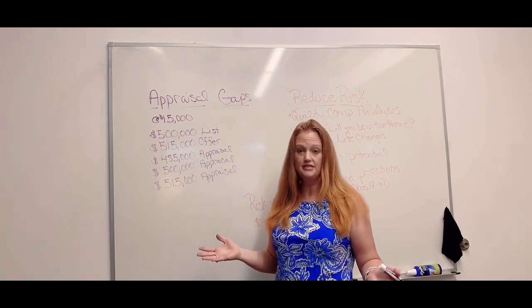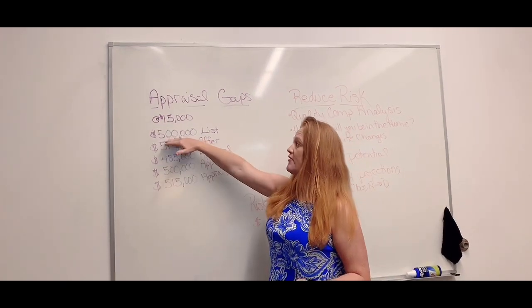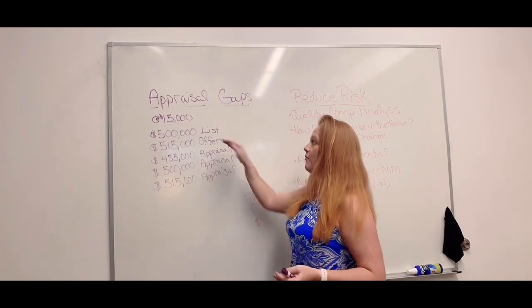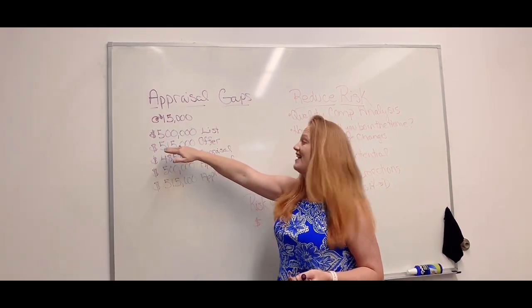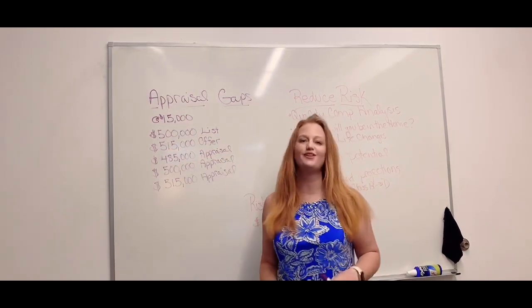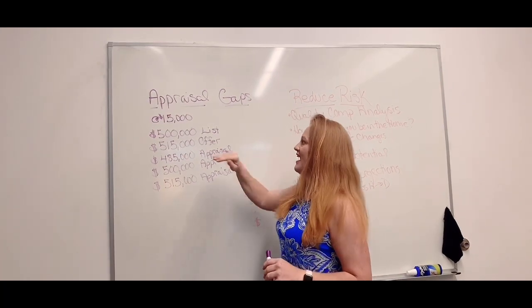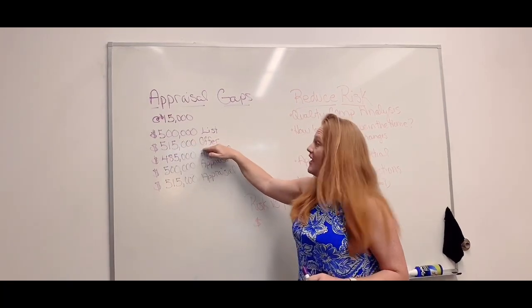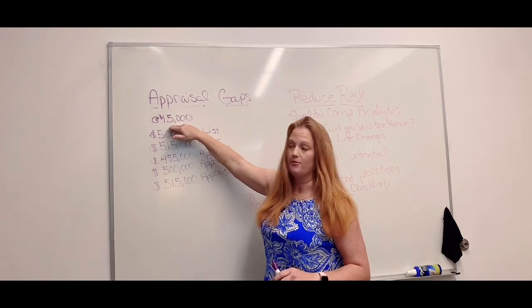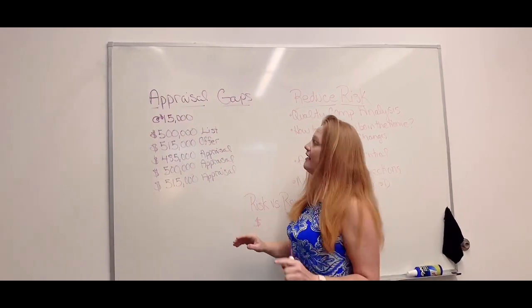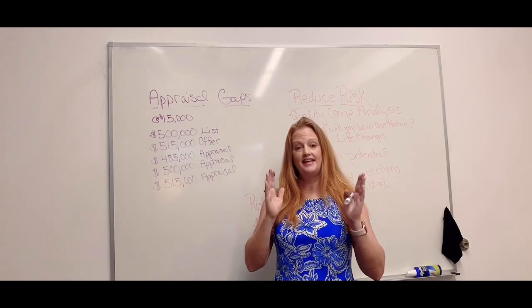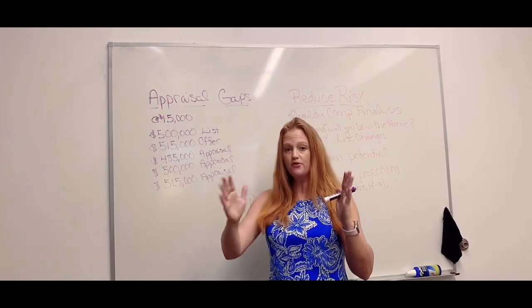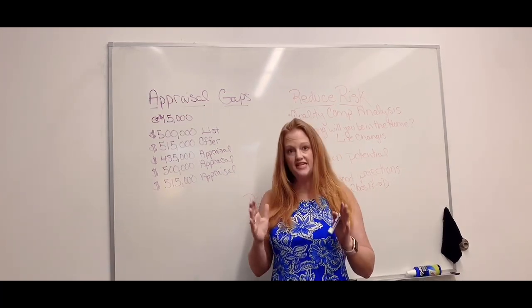Let's say you're doing a $15,000 appraisal gap. What that actually means is, let's say you have a half a million dollar house, which is the list price, and you're going to go in at $515,000. So a $515,000 offer with a $15,000 appraisal gap, which means you will cover a gap between the appraisal and the purchase price by up to $15,000.